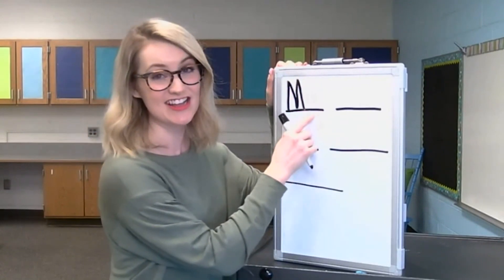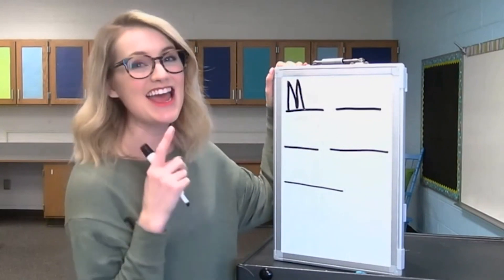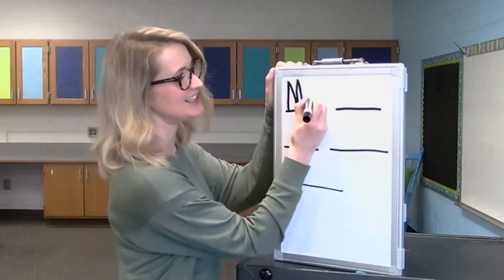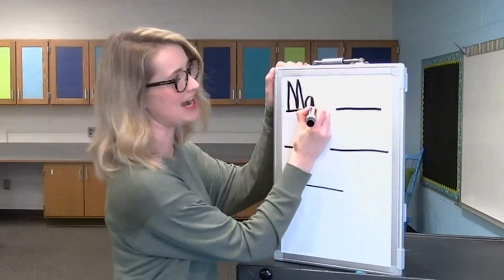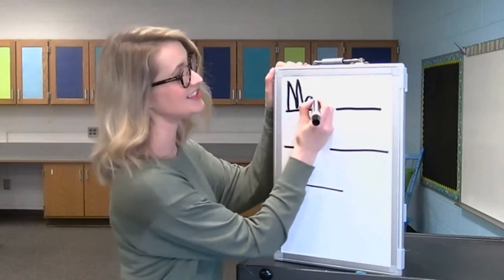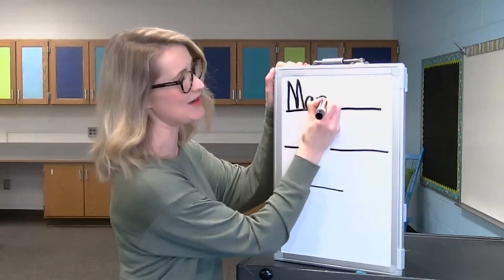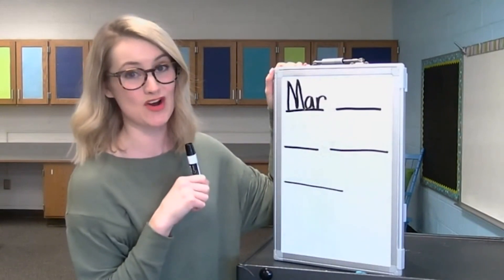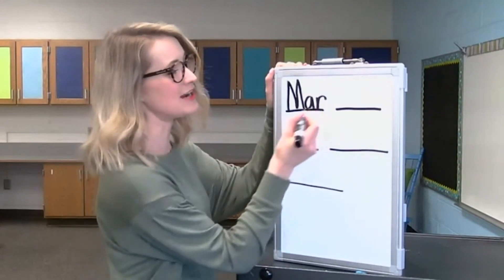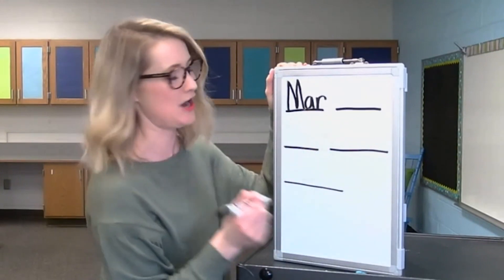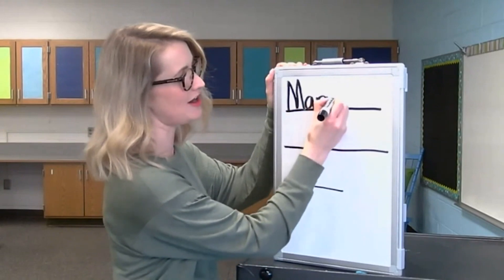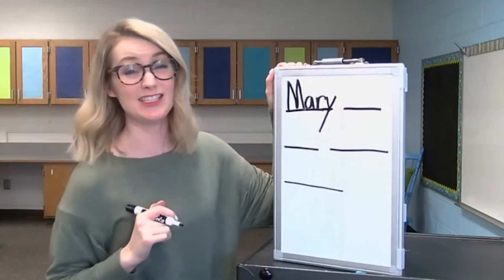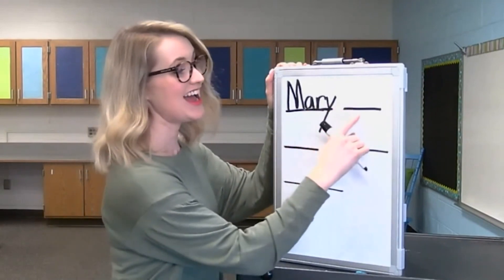M-air. The next sound is the air sound. A and R work together to make the air sound, like in the word care. Let's write it: start in the middle, make a C, close it, and go down. Let's make an R: start in the middle, slide down, back up, and around. M-air-ee. Now it sounds like an E at the end of that word, but it's actually a Y. Sometimes the letter Y says the long E sound. Start in the middle, slant down, back up, and all the way down. Let's read what we have so far: Mary. Had.